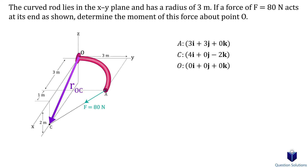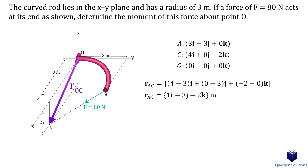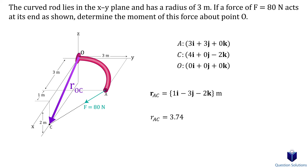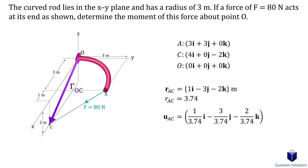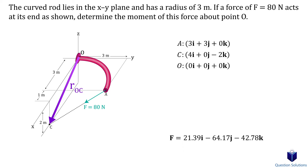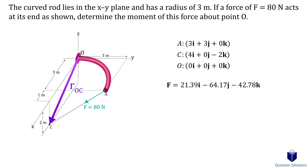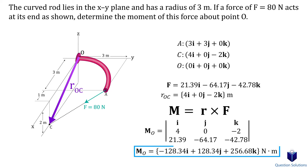Now let's write our position vector from A to C, then find its magnitude. Using the magnitude, we can find the unit vector. To express our force in Cartesian form, we multiply the magnitude of the force by the unit vector. Next, for our equation we need a position vector from point O to C, which is where the force ends. Now we can take the cross product — that is our answer.